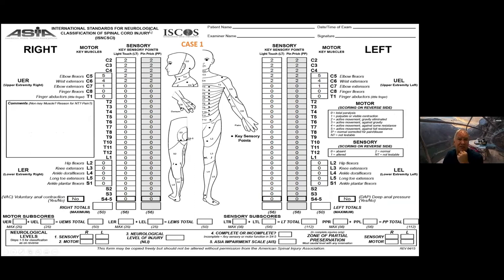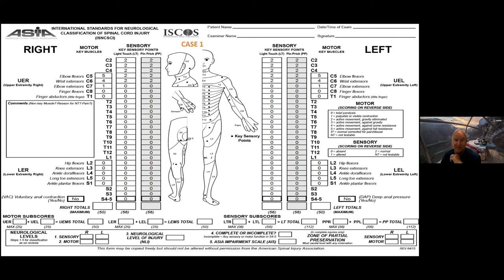Now let's run through some cases. The cases get more difficult as we continue, so I encourage you to volunteer sooner rather than later. Case one is the easiest. Dr. Kuhnit, can I have you walk us through this case? I'll guide you through the steps — tell me what you see about sensory levels and then motor levels.